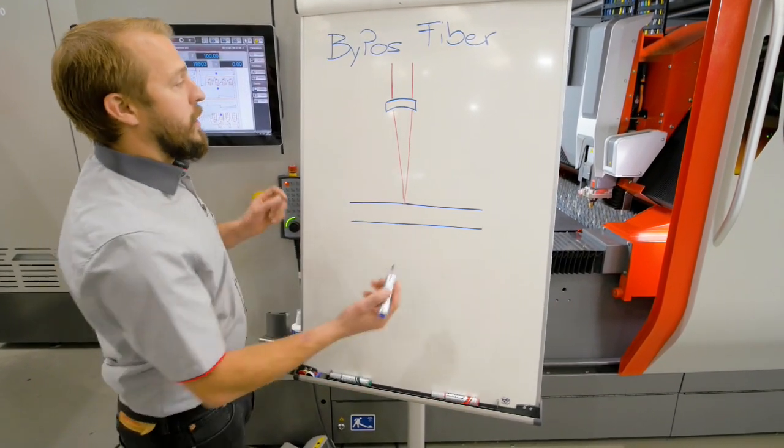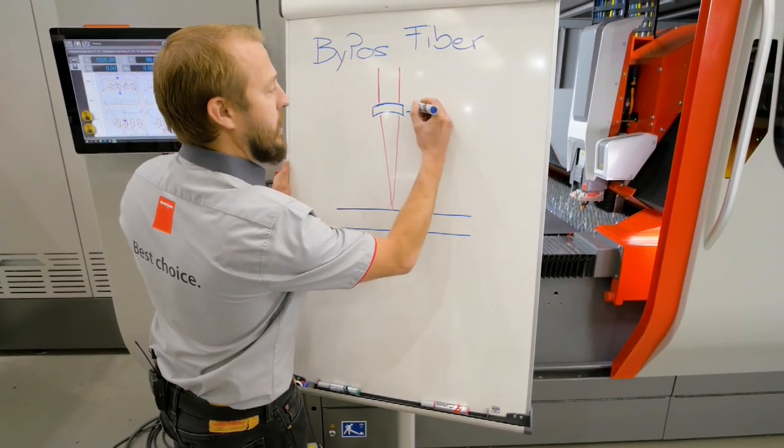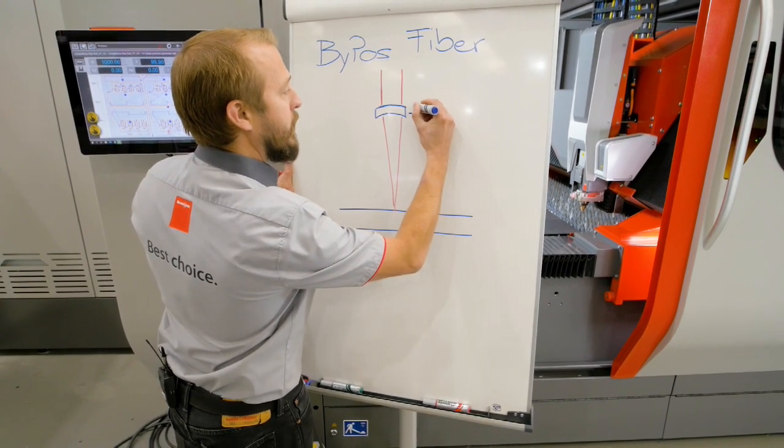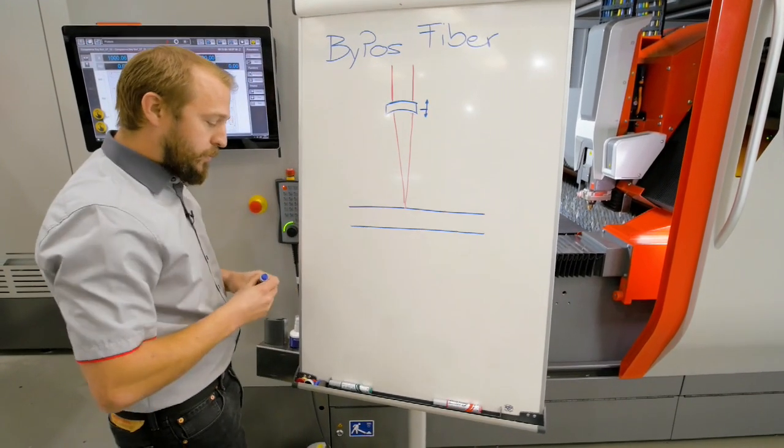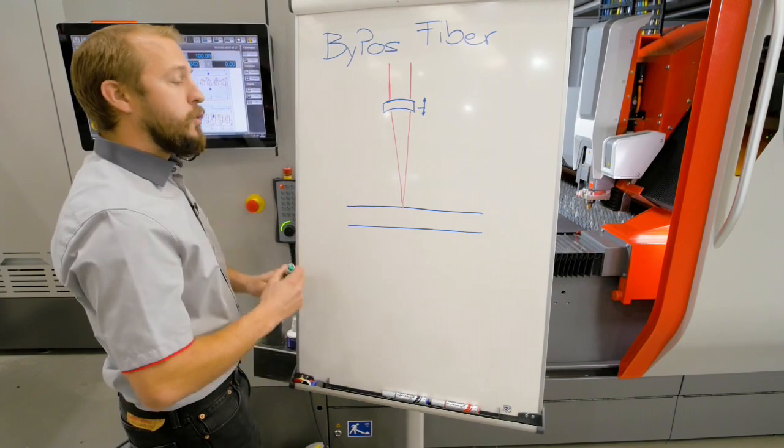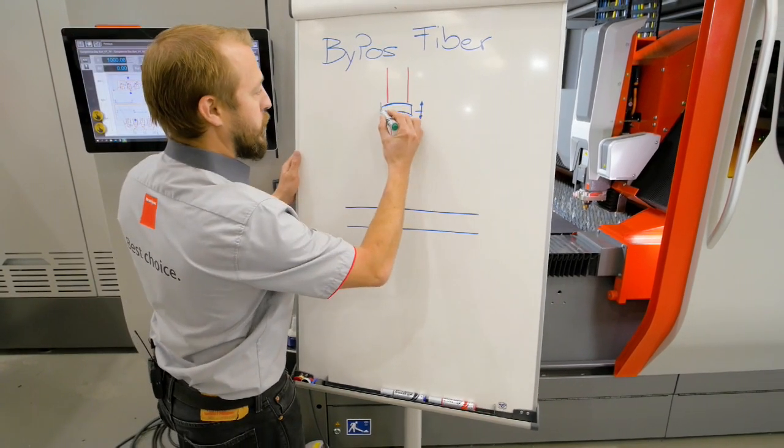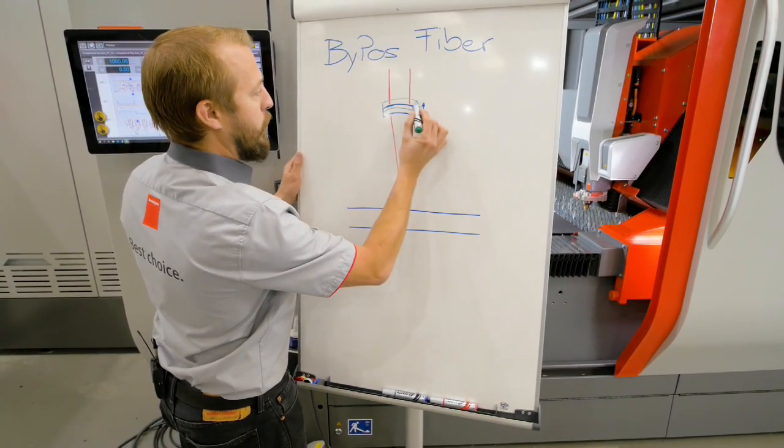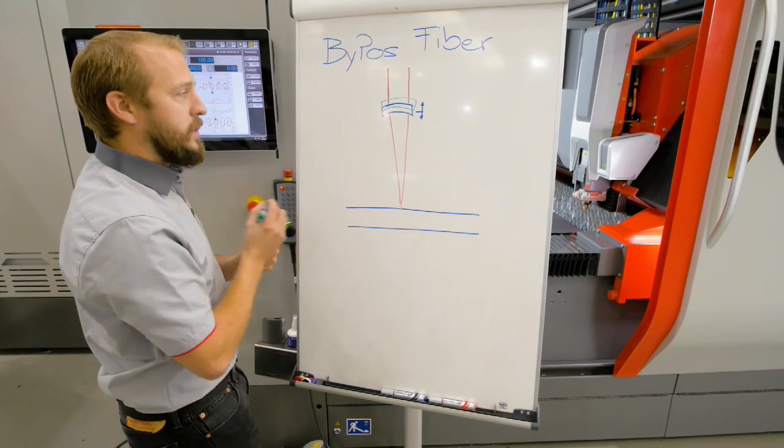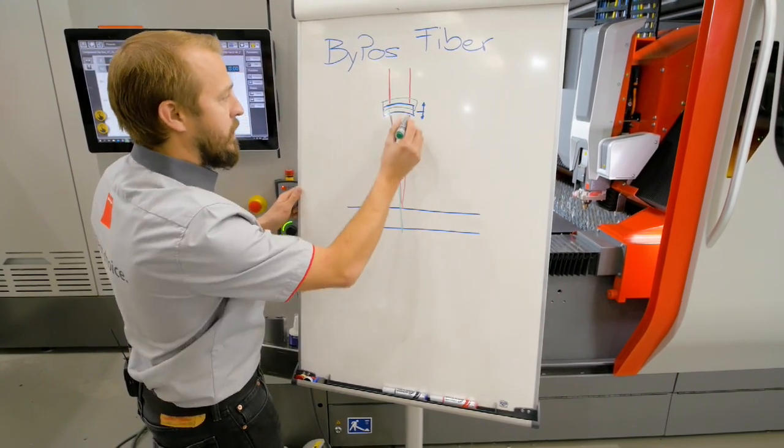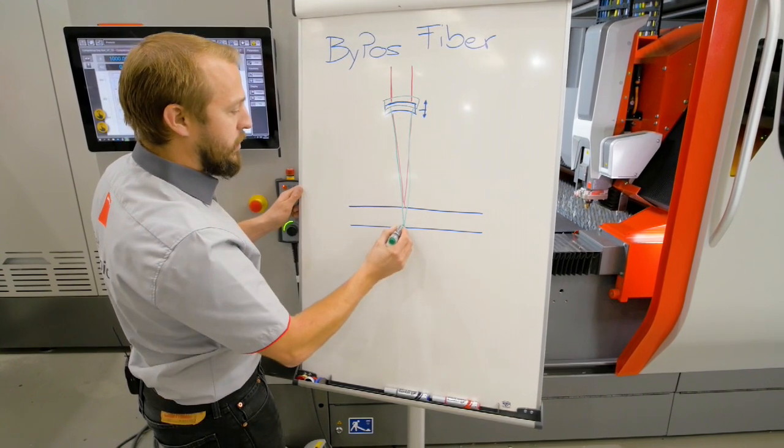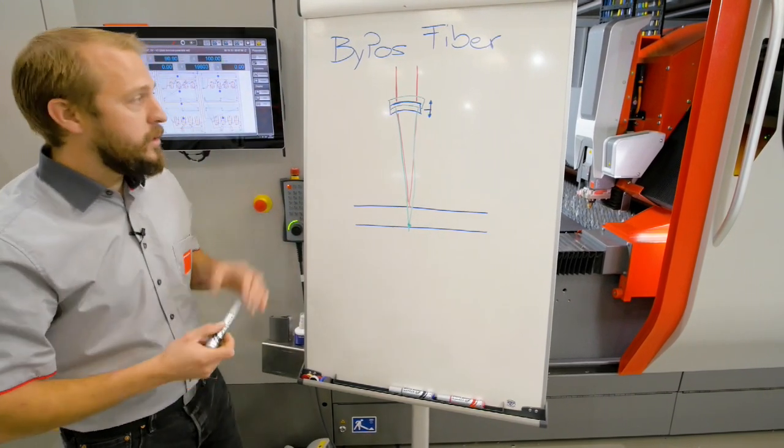What we are doing is just taking this lens here, moving it up or down to a certain position to change that position of the focal point. Now we raise up our lens and our spot is going to be much lower.